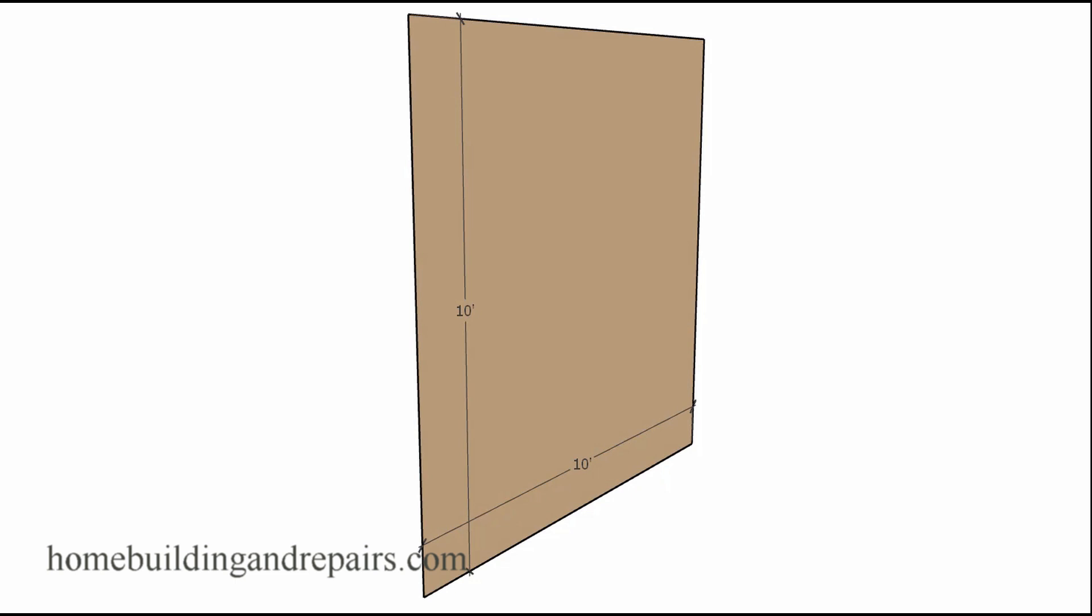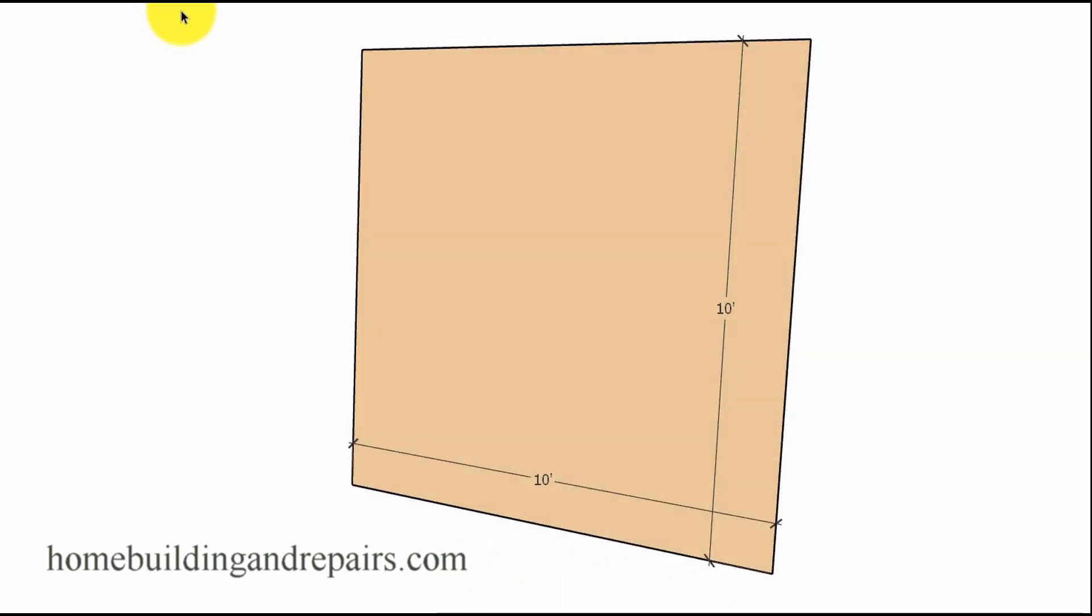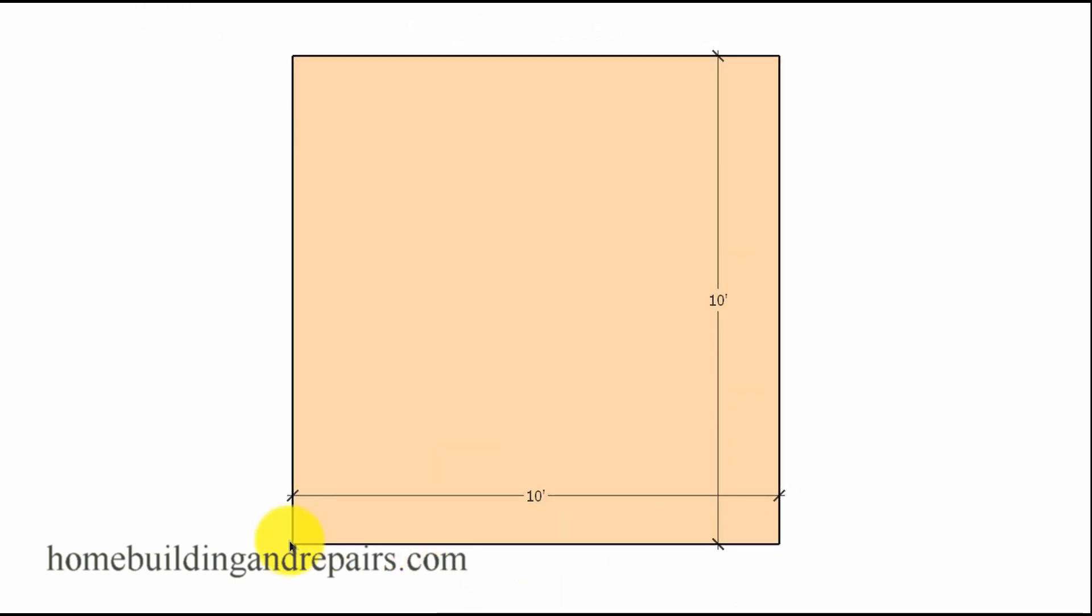A 45 degree angle is simply a diagonal line across a square. So here we have a 10 foot by 10 foot square, and of course here is our diagonal line. A 45 degree angle is just a diagonal line connecting the corners of a square.